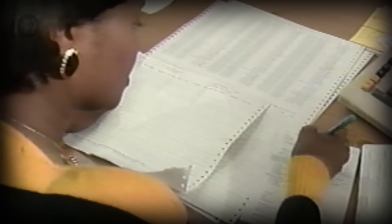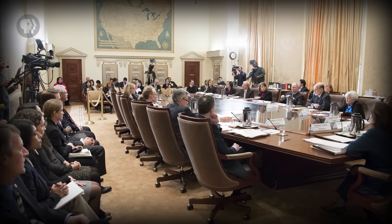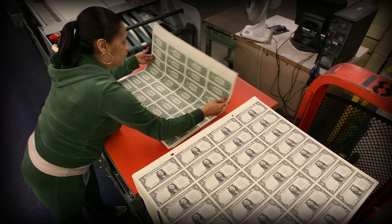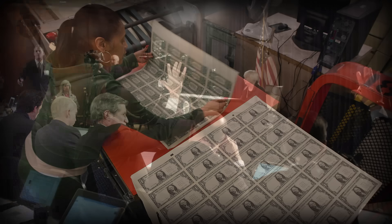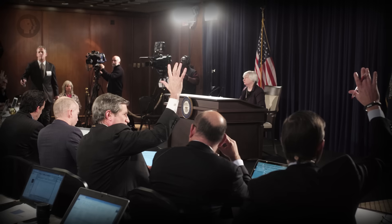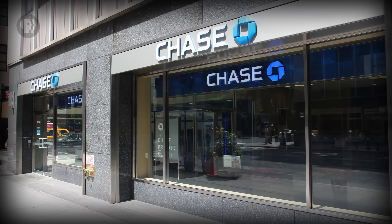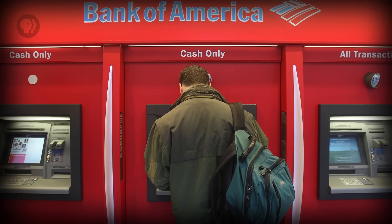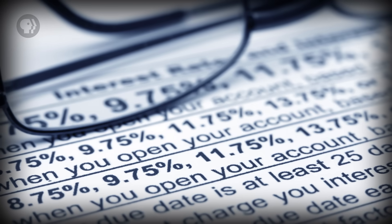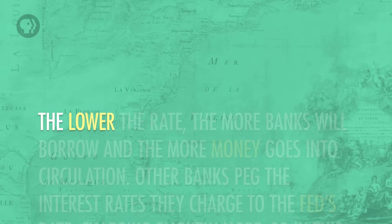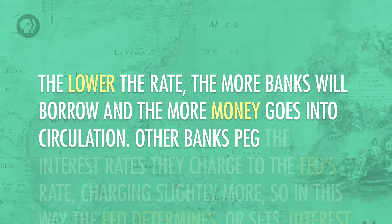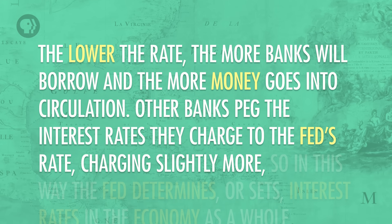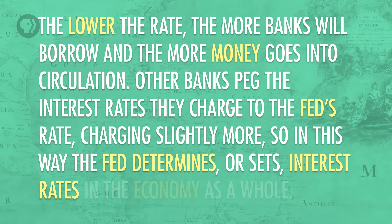The Fed is responsible for clearing checks and for supplying actual currency, most of which is kept in highly secure facilities. The Fed also sets rules for banks, although these can also be set by Congress. But the most important thing the Fed does is loan money to other banks and set interest rates. The Fed loans money to banks, which they in turn loan out to businesses and individuals, and like all loans, the Fed charges interest. The Fed sets the rate on the interest, called the discount rate, and this determines mostly how much money banks will borrow. The lower the rate, the more banks will borrow, and the more money goes into circulation. Other banks peg the interest rates they charge to the Fed's rate, charging slightly more, so in this way the Fed determines interest rates in the economy as a whole.